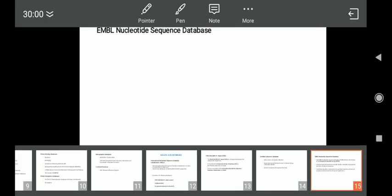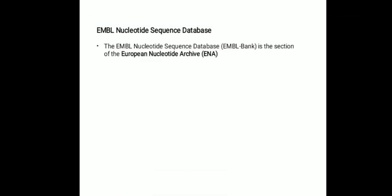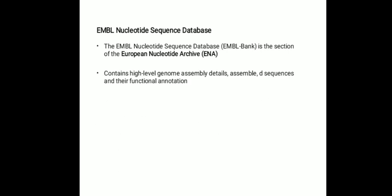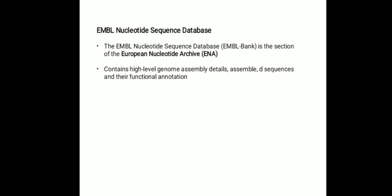The EMBL Nucleotide Sequence Database, also known as EMBL Bank, is the section of the European Nucleotide Archive or ENA which contains high-level genome assembly details as well as assembled sequences and their functional annotation. EMBL Bank is contributed to by direct submission from genome consortia and smaller research groups, as well as by retrieval of sequence data associated with patent applications.